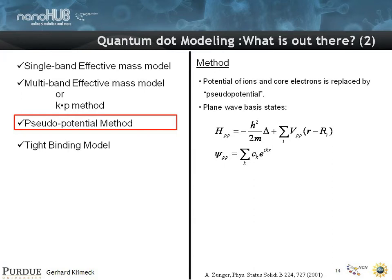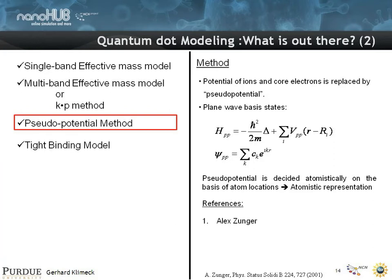So it is atomistic, it captures most of the things that I've been talking about in this lecture series before. Alex Zunger is a big proponent of it and there's a reference here. The drawback really is that it's computationally very expensive.